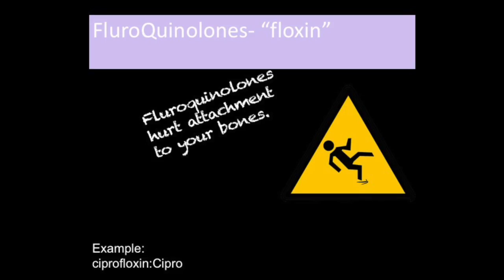The next class is quinolones, also known as fluoroquinolones. They are bacteriostatic and interfere with DNA synthesis. Fluoroquinolones end in '-floxacin' and are commonly used for UTIs—think F for flow of urine. These medications have rare but serious side effects including CNS effects such as dizziness, confusion, and seizures, as well as colon inflammation and damage to cartilage and tendon rupture. Examples include ciprofloxacin, or Cipro.